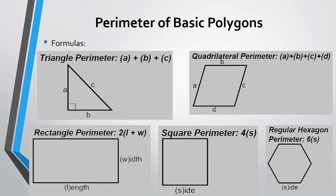Same thing with the quadrilateral — we write A plus B plus C plus D, or just add all the sides. For a rectangle, you can do length plus width plus length plus width, or just add length plus width and then double it. For a square, if you know one side, multiply by four to get the perimeter. You can extend that to all regular polygons — for a regular hexagon, multiply the side length by six.